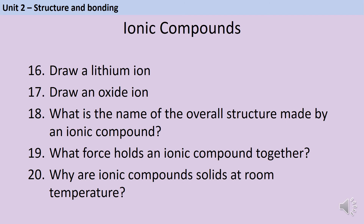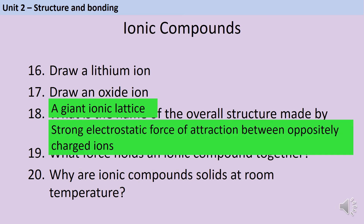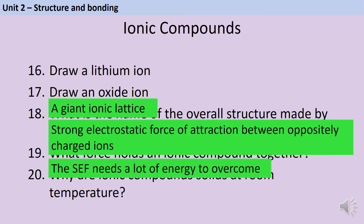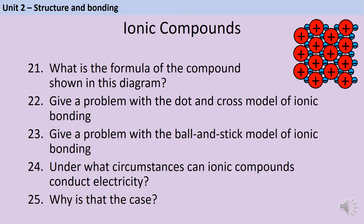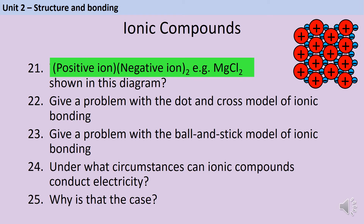The overall structure made by an ionic compound is a giant ionic lattice, held together by a strong electrostatic force of attraction between the oppositely charged ions. Ionic compounds are solids at room temperature because this strong electrostatic force of attraction requires a huge amount of energy to overcome. If you count up all the positive and negative ions in the diagram, you'll find there are twice as many negative ions as positive ions. The negative ion always goes second in the compound formula — so for instance this could be magnesium chloride (MgCl₂).